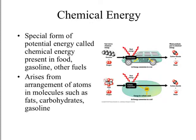The type of energy we're going to focus on in the biological world is chemical energy, which is a form of potential energy present in food, gasoline, and other fuels that things use in order to run and survive. It arises from the arrangement of atoms and molecules — in particular, the fats and carbohydrates that living animals eat, and also in gasoline which cars use. The energy stored in the bonds between those atoms is what we call chemical energy.